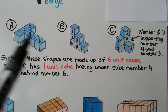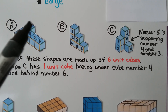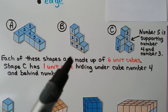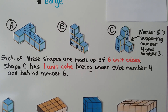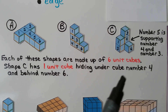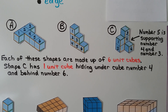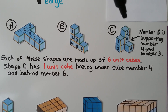Here we have shapes A, B, and C, each made up of six unit cubes. Counting each: one through six for A, one through six for B, and shape C also has six. However, shape C has one unit cube hiding under cube number four and behind cube number six — cube number five is supporting numbers four and three. It's not empty underneath; there's a cube hiding back there. So there are six cubes in each of these shapes.